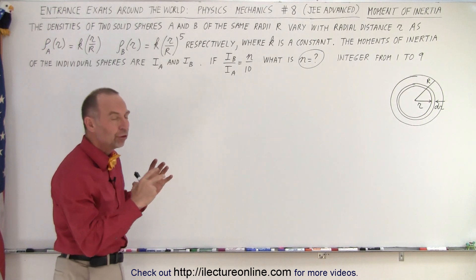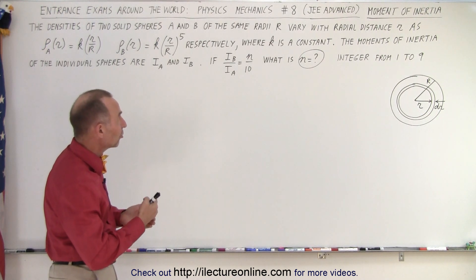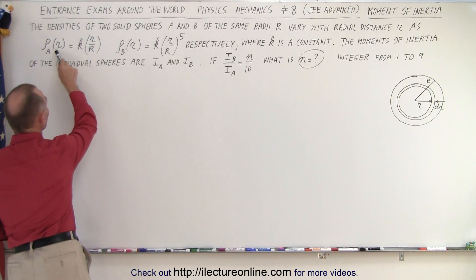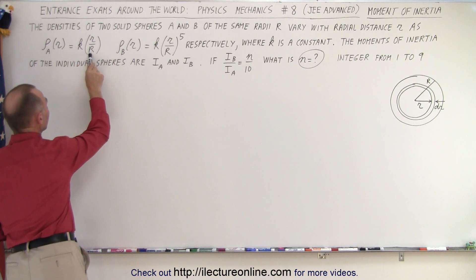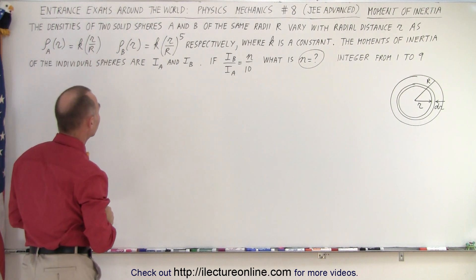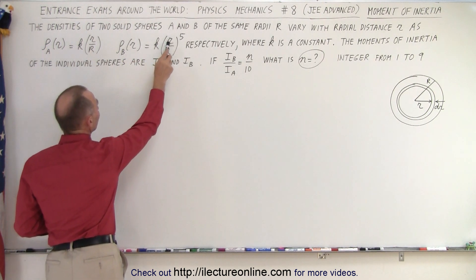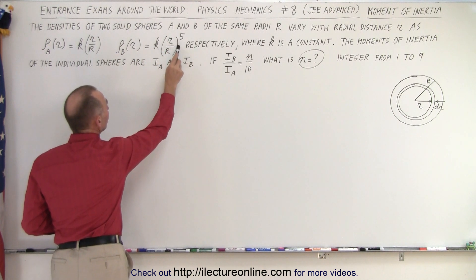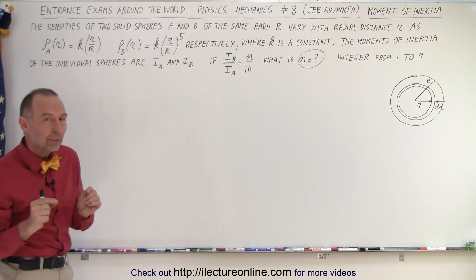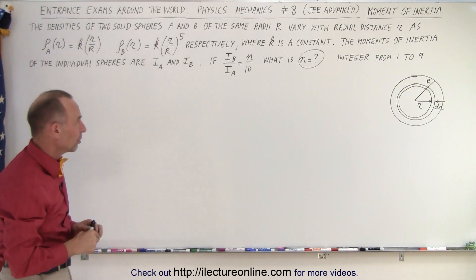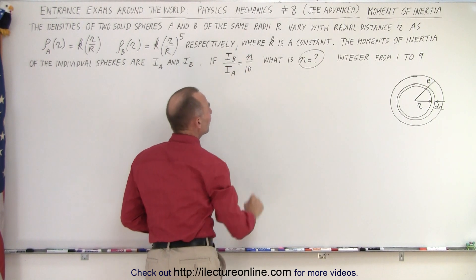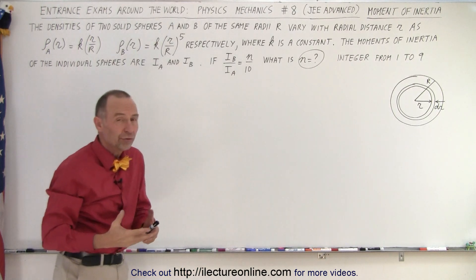They're giving us two spheres, A and B, that have the same radius R but different densities. Density of A is a function of r: k times r over R. Density of B is equal to k times r over R to the fifth power. K is just a constant. We need to calculate the moment of inertia of these two spheres such that the ratio IB over IA equals n over 10, and n — an integer from 1 to 9 — needs to be found.